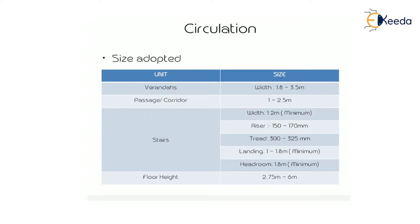The passage or corridor width is 1.0m to 2.5m. The staircase is used for vertical circulation. The width of a staircase is 1.2m minimum, rise is 150 to 170mm, tread is 300 to 325mm, landing is 1.0 to 1.8m minimum, headroom height is 1.8m minimum, and floor height is 2.75m to 6.0m for circulation purposes.